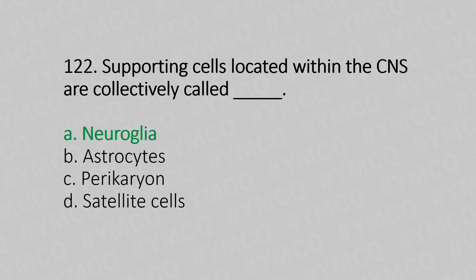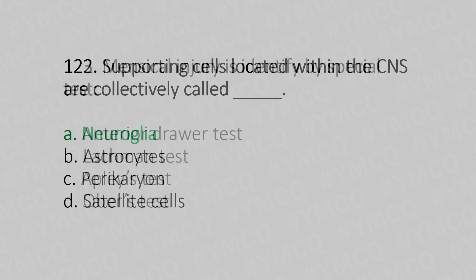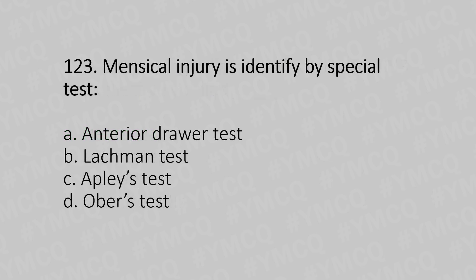Question number 123: Meniscal injury is identified by which special test? Option A: anterior drawer test, Option B: Lachman's test, Option C: Apley's test, Option D: Operator test. The answer is Option C, Apley's test.